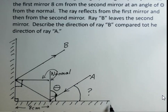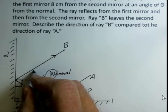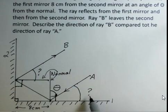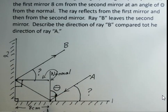This first mirror, mirror number one, and the normal to mirror number two, these two lines are parallel to each other. So what's the relationship of the angle here and the angle up here? That will tell us the orientation of ray B compared to ray A.